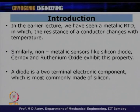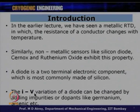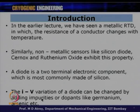A diode is a two-terminal electronic component most commonly made of silicon. It allows current to flow in only one direction and has temperature-dependent current properties, which we utilize for temperature detection. The I-V characteristics of a diode can be changed by adding impurities or dopants like germanium and arsenic, allowing us to tailor properties at various temperatures.